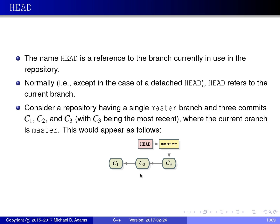HEAD is set, for example, by a checkout operation. Consider a repository with a single master branch and three commits C1, C2, and C3, with C3 being the most recent. If the master branch is checked out, HEAD will be set to the master branch. This ensures the next new commit will be added at the tip of the master branch, because HEAD refers to master, master refers to C3, and C3 will be the parent of any new commit. So effectively, HEAD determines where new commits are added into the repository.